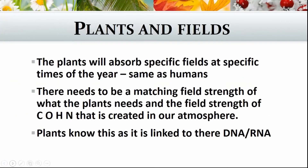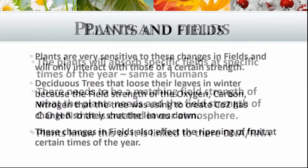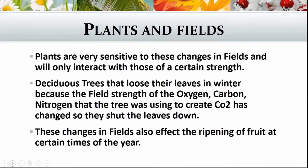When you look at plants and fields, plants absorb specific fields at specific times of the year — same as us. There needs to be a matching field strength between what the plant needs and the field strength of the carbon, oxygen, hydrogen, and nitrogen that is created in our atmosphere. Plants know this because it is linked into their DNA and RNA structure. Plants are very sensitive to these changes in the fields and will only interact with those of a certain strength. For example, deciduous trees that lose their leaves in winter do so because the field strength of the oxygen, carbon, and nitrogen that the tree was using to create CO2 has changed, so they shut the leaves down and they drop off, because there's just no match and they can't continue.